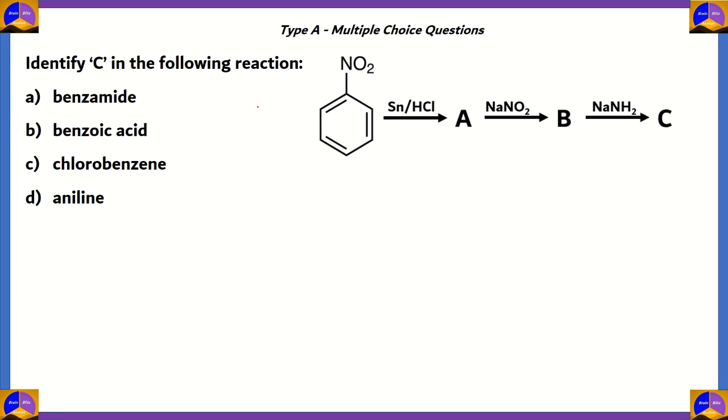Now, let's look at the final question for this particular episode. You need to identify C in the following reaction. So, as you can see, this is a question from organic chemistry. We have an organic compound given with particular reagents. When it reacts with particular reagents, it forms A, B, and C. So, C is basically our end product. We need to identify what is this end product.